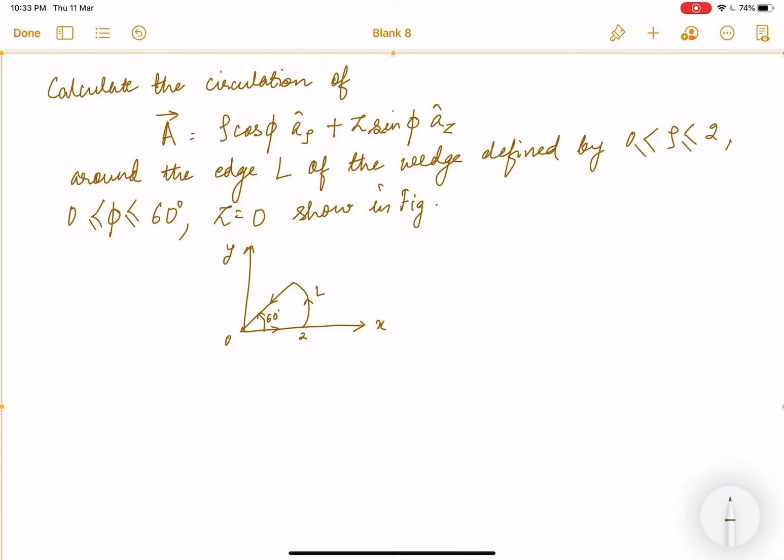Hello everyone, let's solve this question. Calculate the circulation of vector A given as ρ cos φ a_ρ plus z sin φ a_z around the edge L of the wedge defined by ρ from 0 to 2, φ from 0 to 60 degrees, and z equals